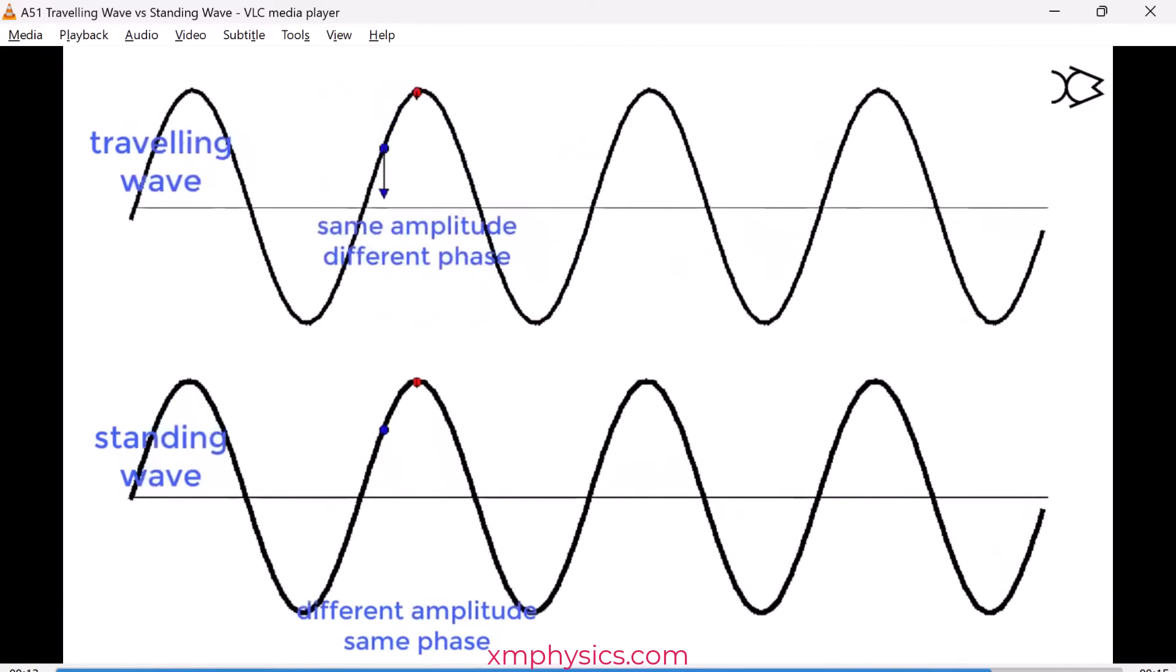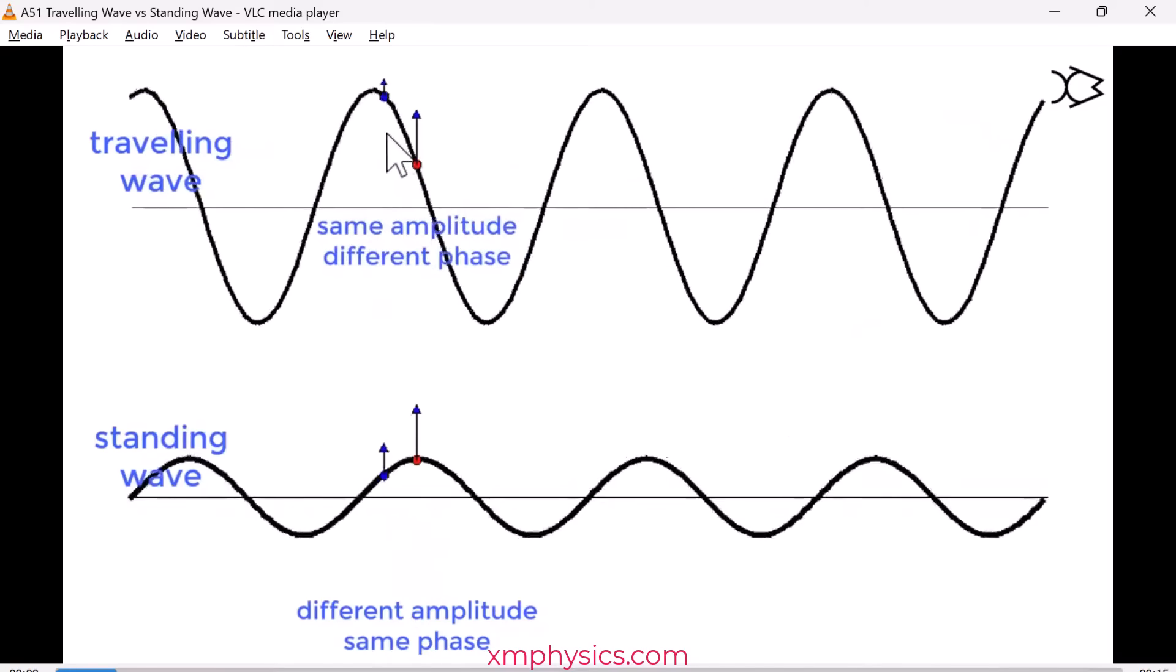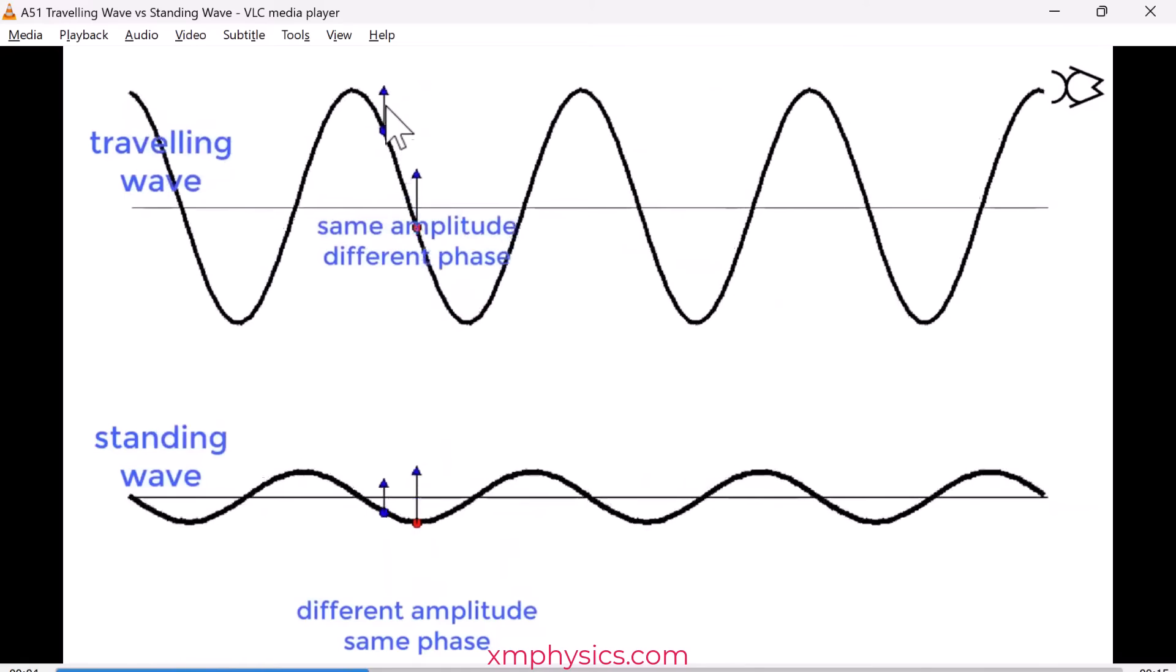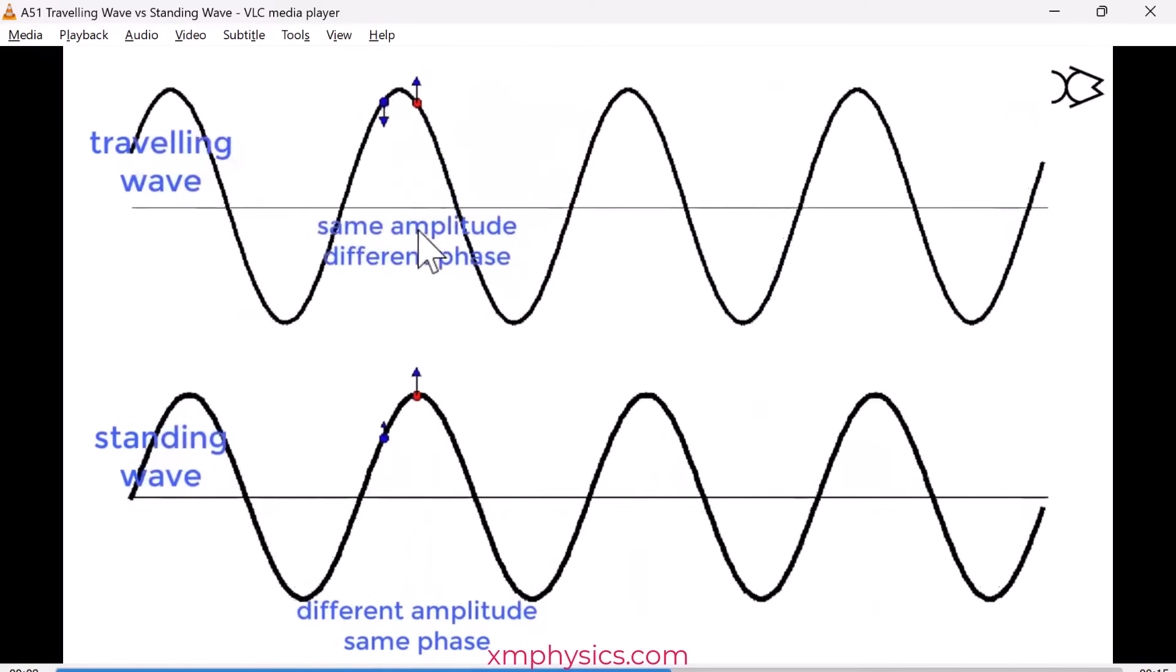Now let's talk about the amplitude of oscillations. For the traveling wave, every point in the traveling wave has the same amplitude of oscillation. You compare the oscillation of the blue and the red, both of them reach the same amplitude. It's just that they reach it at a different time only, but they reach the same amplitude.